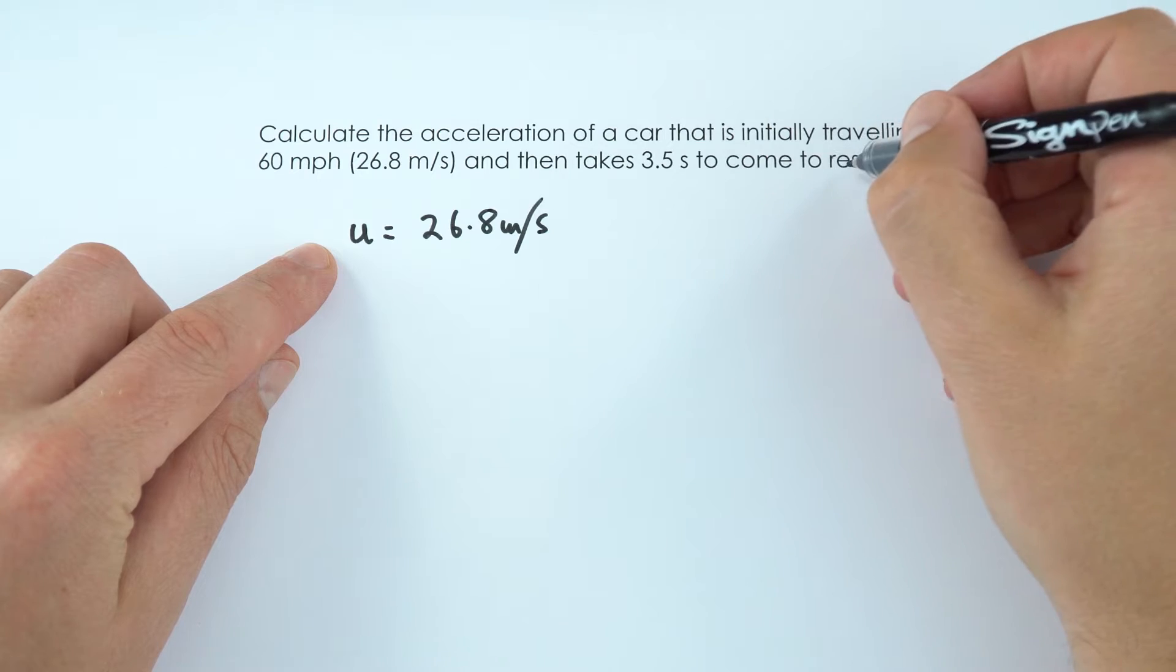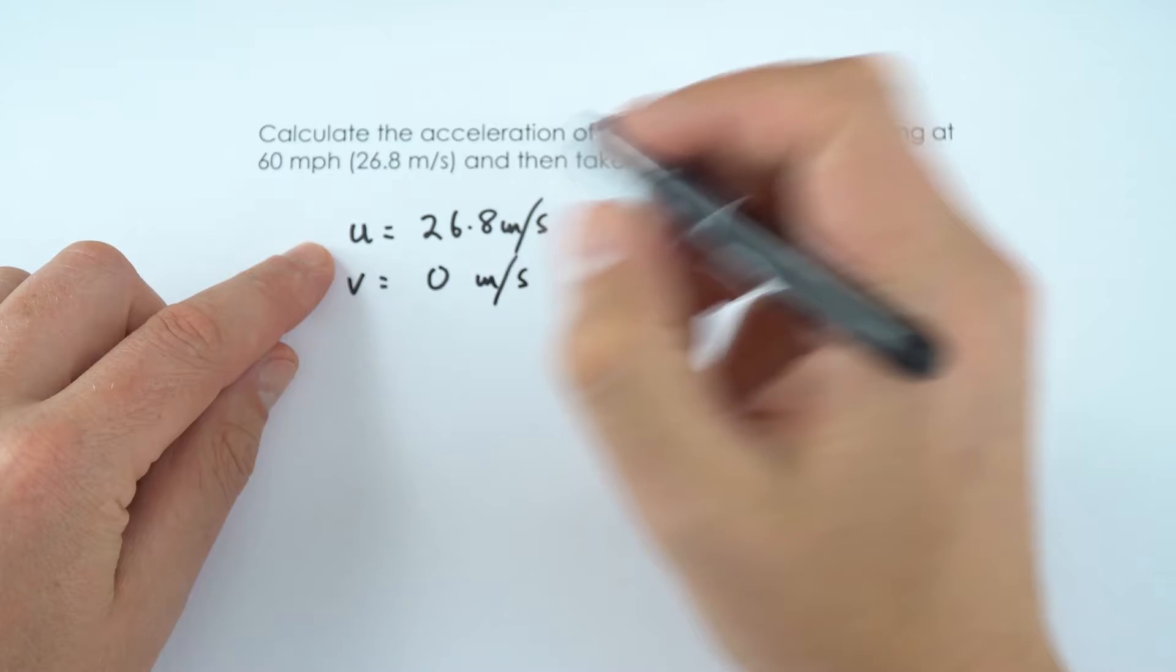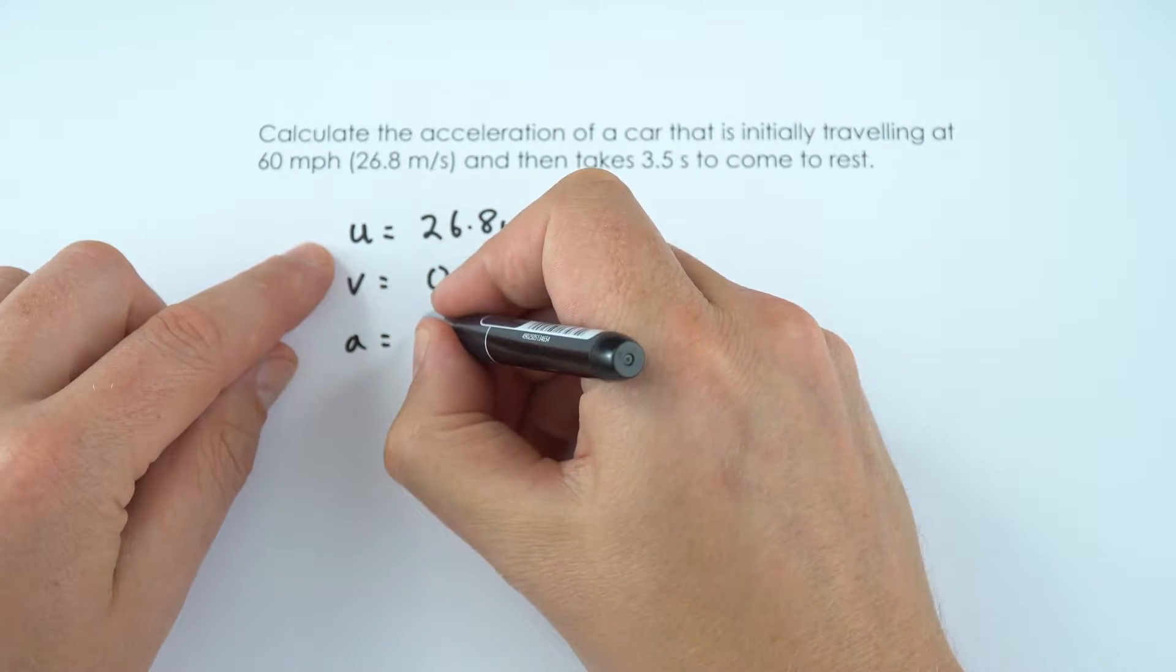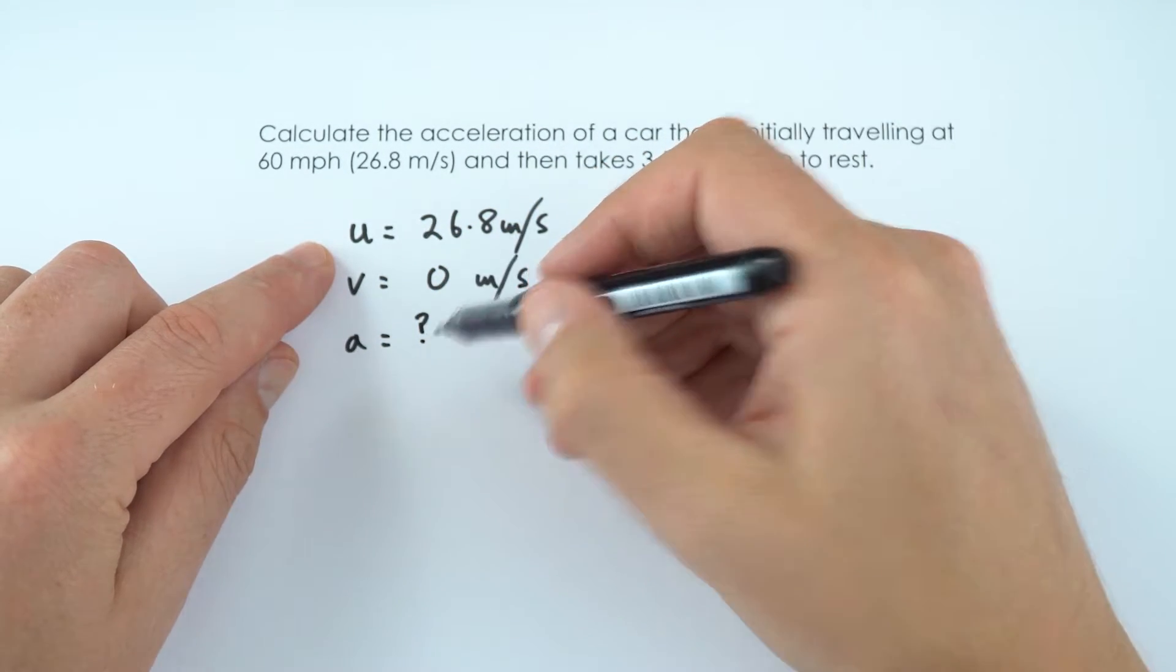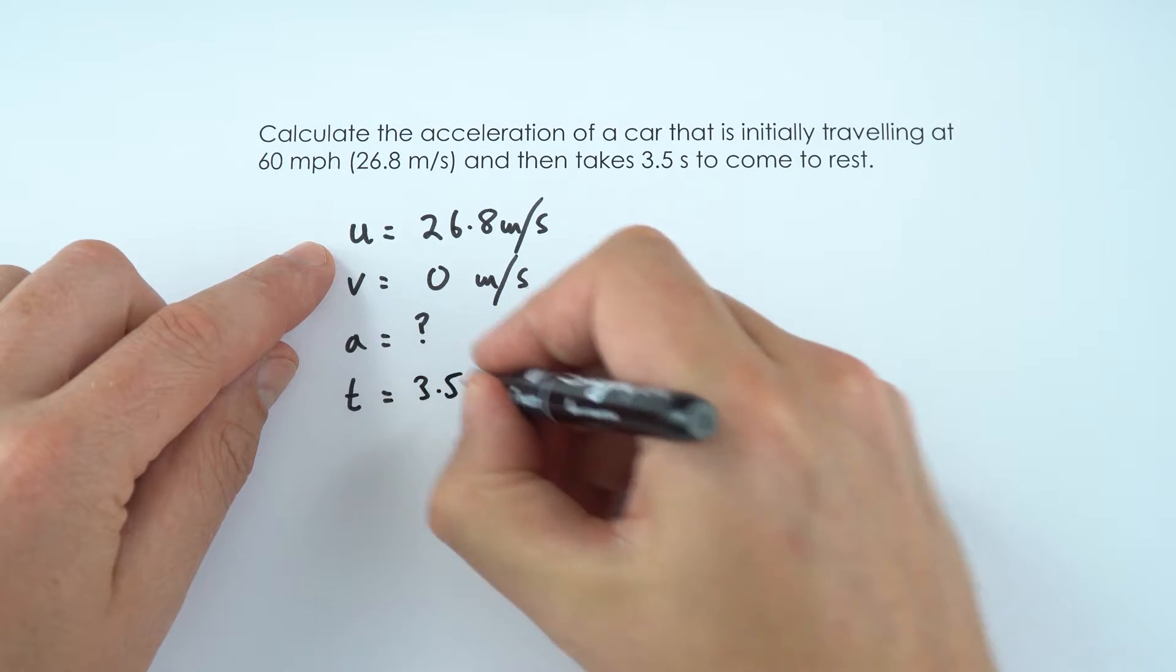Now the final velocity, if it comes to rest, v is going to be equal to 0 meters per second. The acceleration is something that we don't know but we're going to try and work this out, and the time it says here is equal to 3.5 seconds.